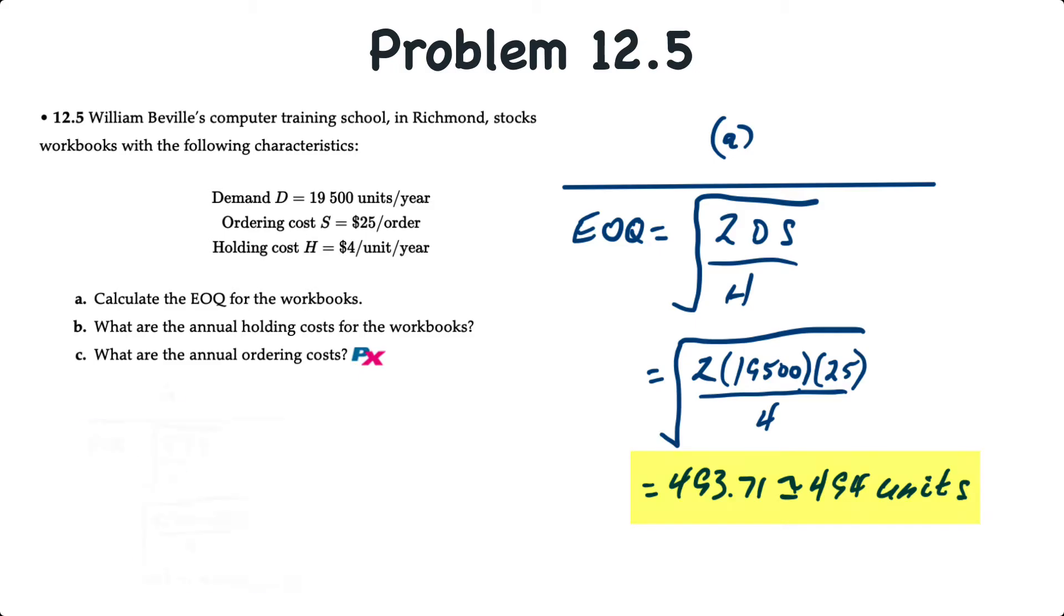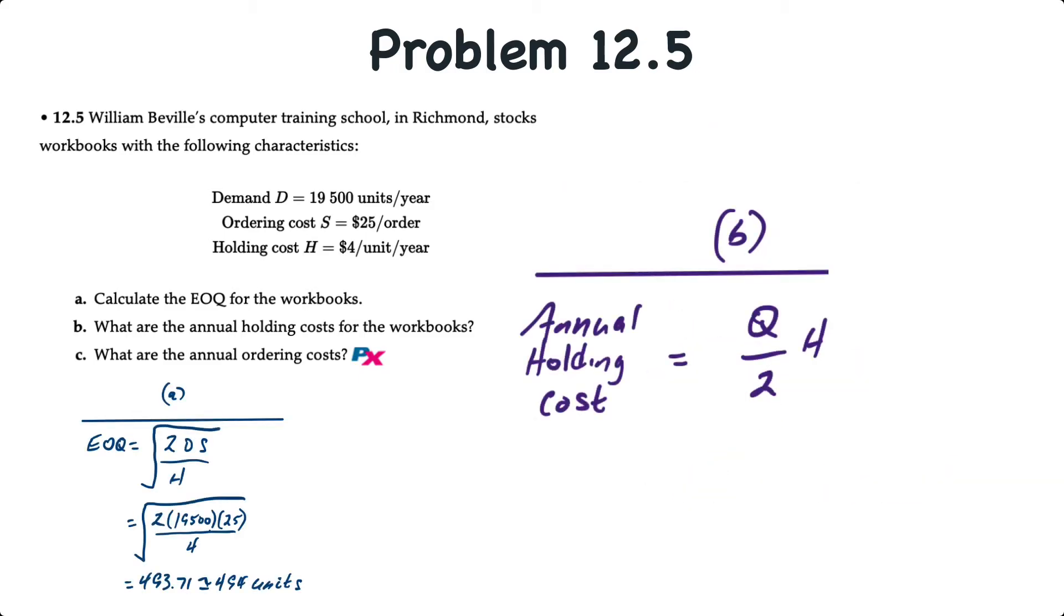For requirement B, the annual holding cost, that's equal to Q over 2 times H, where Q over 2 is the average inventory, and we're going to use the economic order quantity as our optimal quantity in this formula. So that's 494 divided by 2 times $4 holding cost. That's $988.